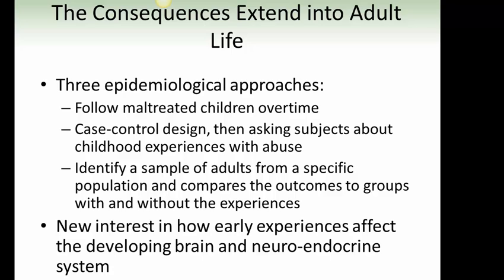Three epidemiological approaches are used: following maltreated children over time; case control design, asking subjects about childhood experiences with abuse; and identifying a sample of adults from a specific population and comparing outcomes between groups with and without those experiences. There is new interest in how early experiences affect the developing brain and neuroendocrine system.